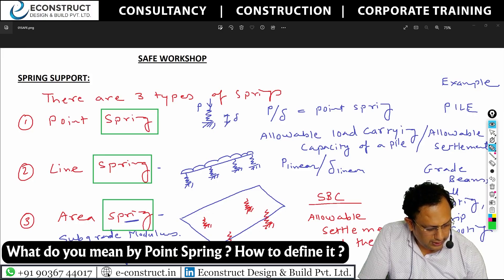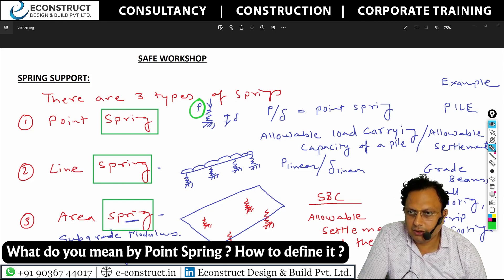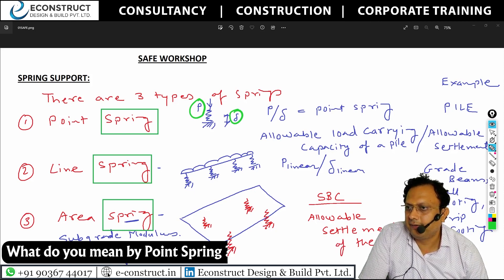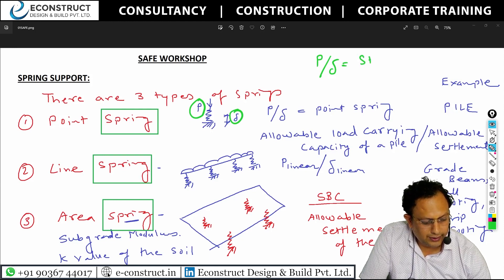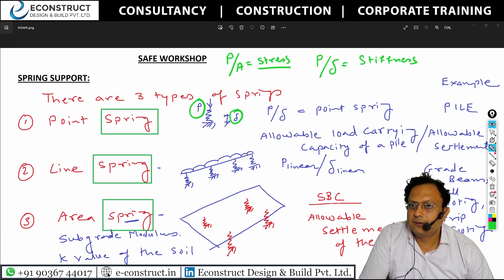What do you mean by point spring? It is the vertical force P coming onto the structure divided by delta. P divided by delta is known as stiffness. P upon area is known as stress. Understood?